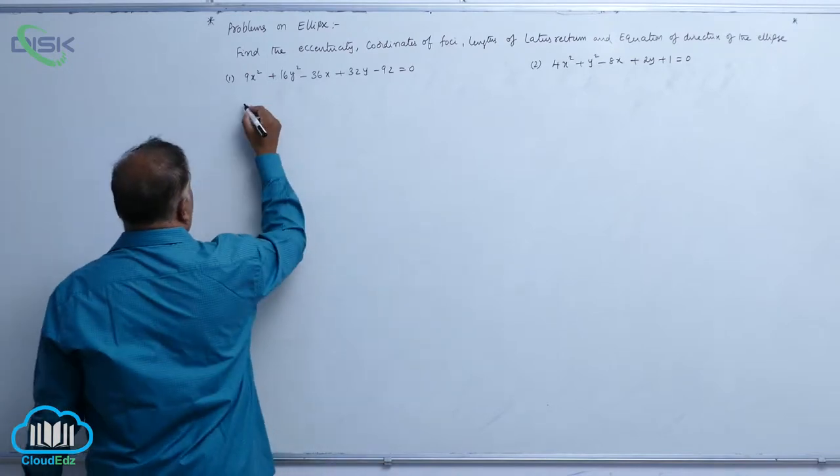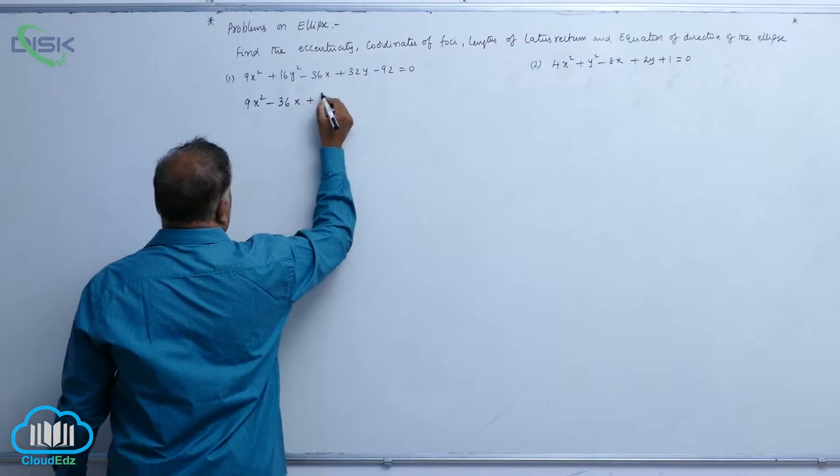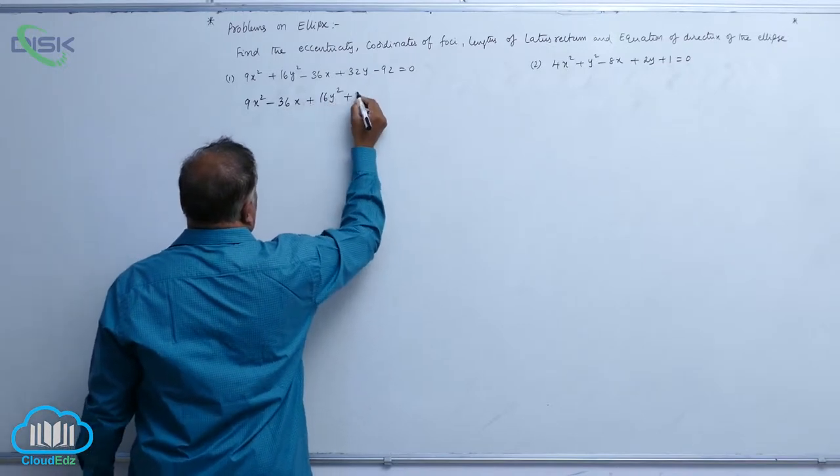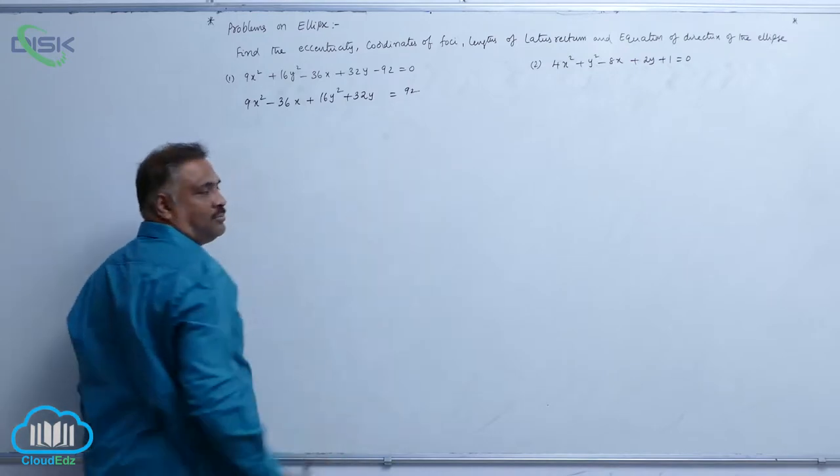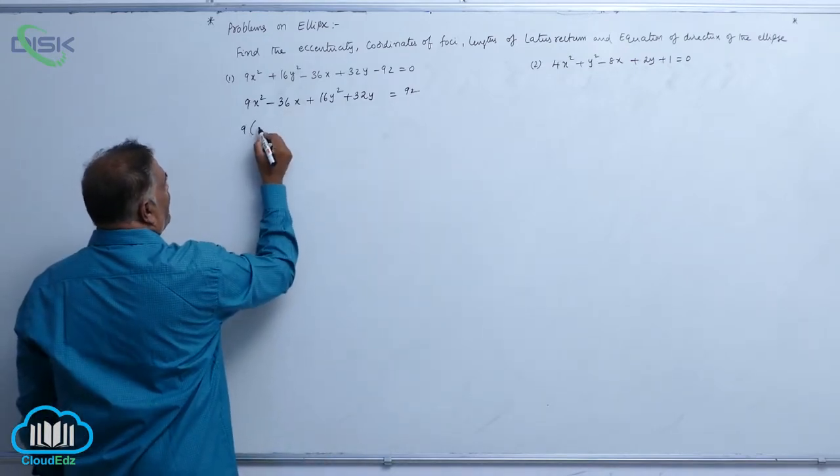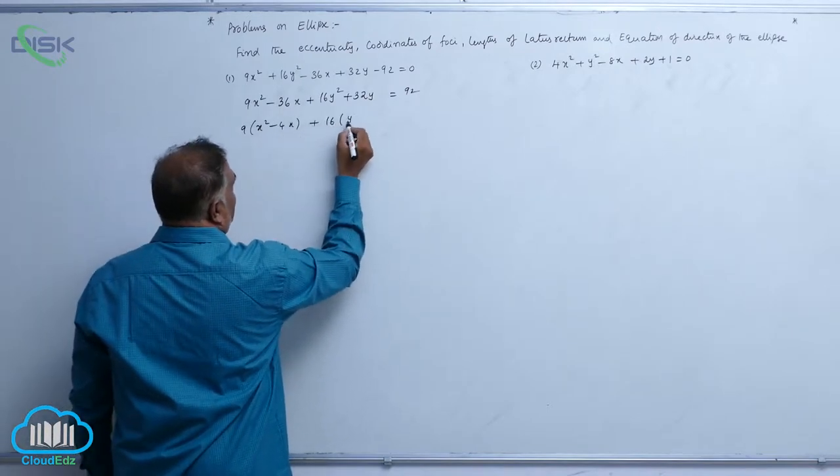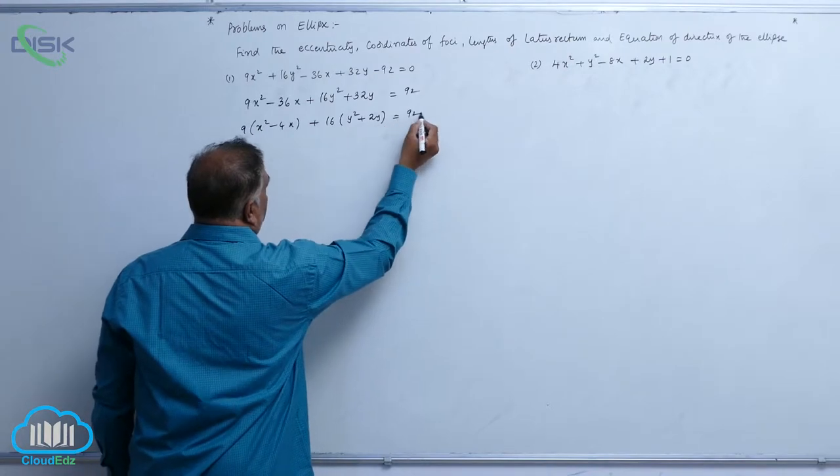Now first consider this equation: 9x square minus 36x plus 16y square plus 32y is equal to 92. Now in these two you can take 9 common, you will get x square minus 4x, 16 common y square plus 2y is equal to 92.